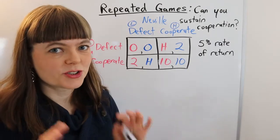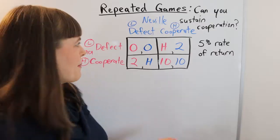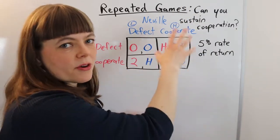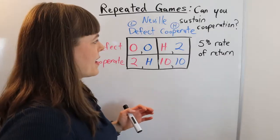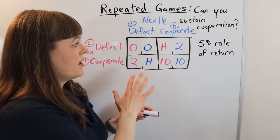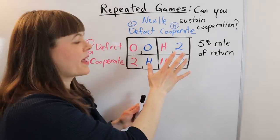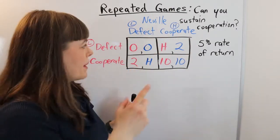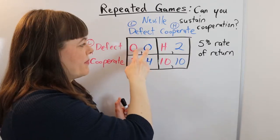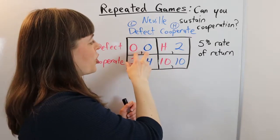So repeated games are super common. They happen whenever you have this long-standing relationship with the other person or the other firm. And this helps us think through scenarios where, if these two people were to play the game once, maybe the Nash equilibrium would be to defect or to undercut your competitor. That's how prisoner's dilemmas work.